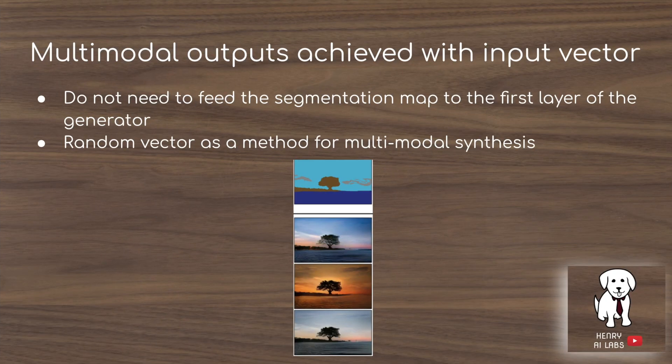GANs really struggle to produce multimodal outputs, and this technique uses a simple idea to address that. Because the segmentation map is fed through the normalization layers, a random vector can simply be used as the input to the model. Varying this random Z vector achieves different styles — for example, the same pixel map of a tree over water can produce a daytime image, a sunset image, or a morning image, all by varying the input Z vector.